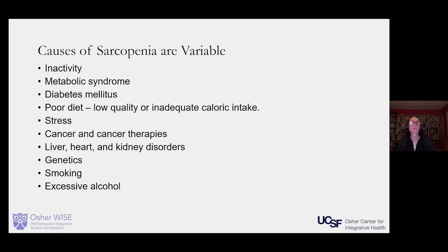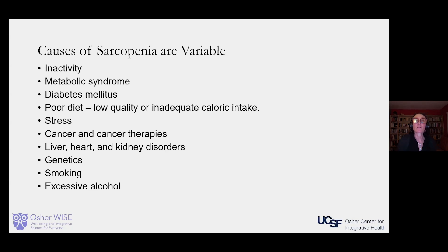The causes of sarcopenia are variable. Inactivity is a very big one. Metabolic syndrome is another, as well as diabetes and poor diet — whether it's a low-quality diet or inadequate caloric intake. Stress can really affect your metabolic health. Cancer and cancer therapies are also causes, as are liver, heart, and kidney disorders. Genetics, smoking, and excessive alcohol are additional contributing factors.